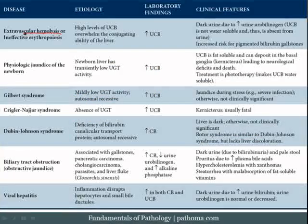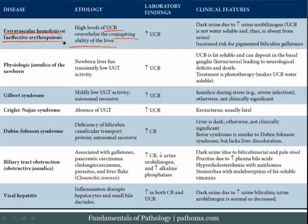The first cause is extravascular hemolysis or ineffective erythropoiesis. In extravascular hemolysis, you get excessive destruction of red blood cells by the reticuloendothelial system. In ineffective erythropoiesis, you get death of red blood cells within the bone marrow due to some ineffective ability to form them, resulting in consumption by the macrophages of the bone marrow. In either case, you get excessive production of unconjugated bilirubin, which overwhelms the conjugating ability of the liver, resulting in high unconjugated bilirubin in the blood and jaundice.